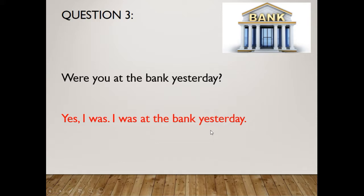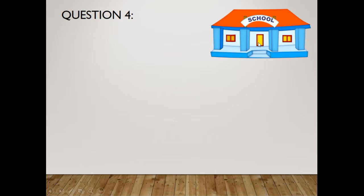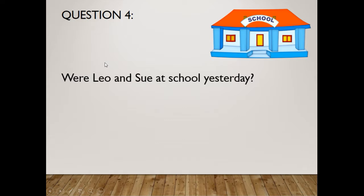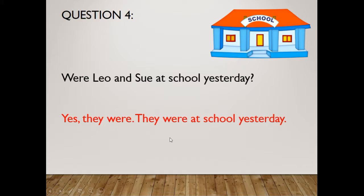Question four: This is a school. The question is, 'Were Leo and Sue at school yesterday?' Leo and Sue are two people, therefore the be verb is 'were'. Answer: 'Yes, they were. They were at school yesterday.'